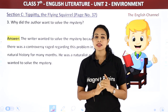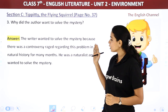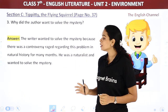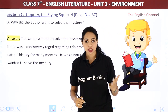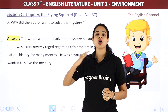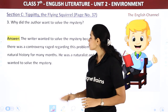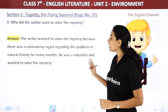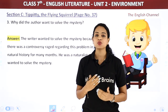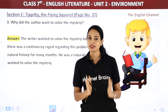Third question: Why did the author want to solve the mystery? The writer wanted to solve the mystery because there was a controversy that had been raging for many months regarding this problem in natural history. There were many disagreements in the natural history field about this particular problem. He was a naturalist and therefore wanted to solve the mystery. That is our third answer.